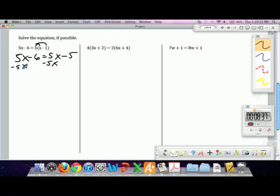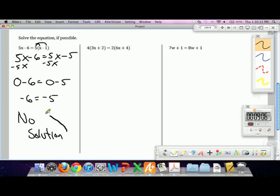Zero minus 6 equals zero minus 5? Or negative 6 equals negative 5? Does negative 6 equal negative 5? No. Not really. Since, folks, since your equation lost all the variables, and it does not make sense, negative 6 is not equal to negative 5, so there are no solutions.